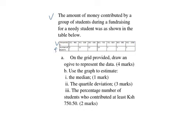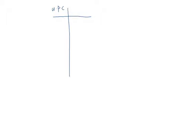We are told, on the grid provided, we are supposed to draw an ogive to represent the data. For us to draw an ogive, which is a graph of the cumulative frequency against the upper class boundary, we have to have the values for the upper class limit and the cumulative frequency. So we draw a table where we have the upper class boundary and the cumulative frequency.